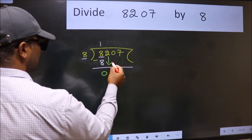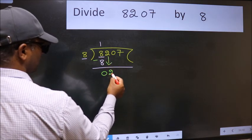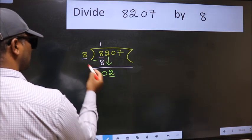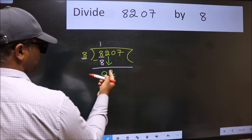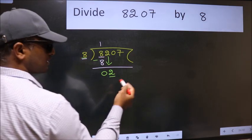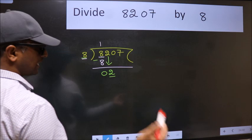After this, bring down the beside number. So, 2 down. Now, here we have 2 and here 8. 2 is smaller than 8. So, we should bring down the second number.